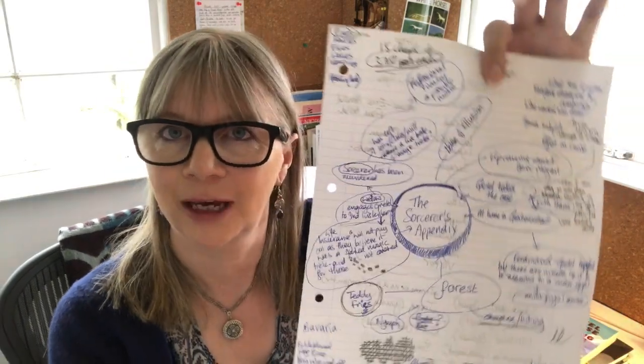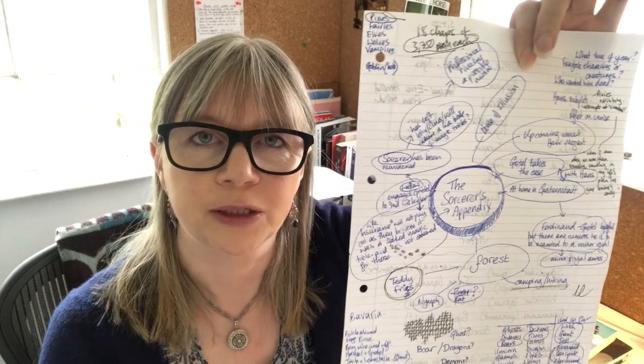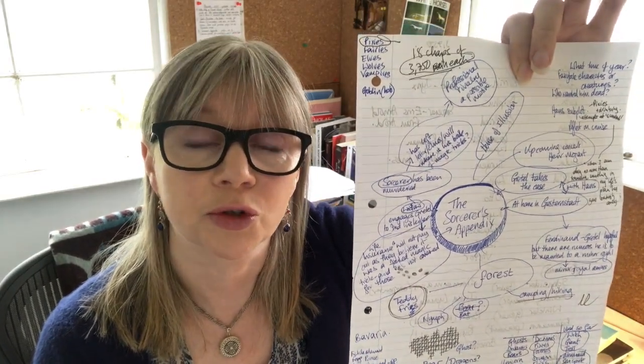The first one I have to show you is the mind map I used to produce a book called The Sorcerer's Appendix. For those of you who know my witchy books, this is a different series — I write these under the name PJ Braxton, and this is a comic crime fantasy historical series.